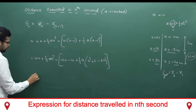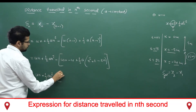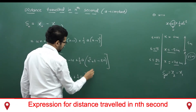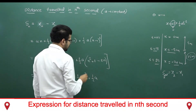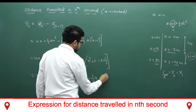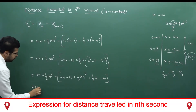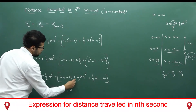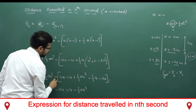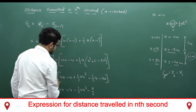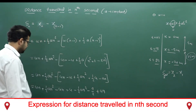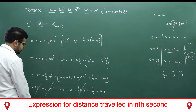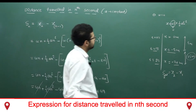On simplifying further: un + ½an² - u(n-1) - ½a(n-1)². Expanding: un + ½an² - un + u - ½an² + ½a(2n) - ½a. The un terms cancel, and the ½an² terms cancel, leaving us with three remaining terms.